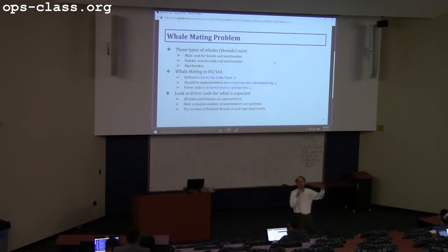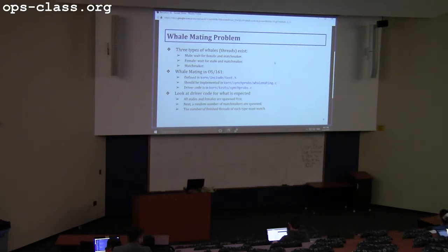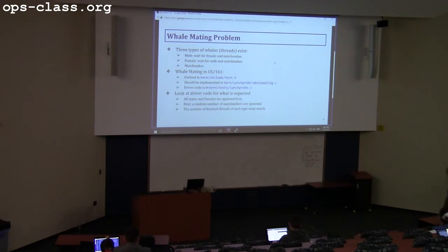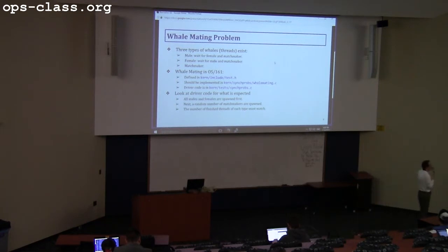For the whale mating problem, the helper code will spawn 30 threads — 10 males, 10 females, and 10 matchmakers. You need to ensure you have one of each before calling the start and end functions. By the time you call the whale leave function, you need at least one of each, otherwise the test will say you're missing one of three. Take a look at how the helper code sets things up — it's well-commented and documented.